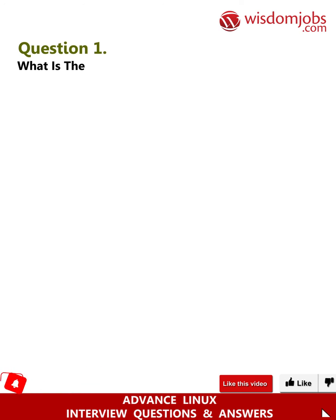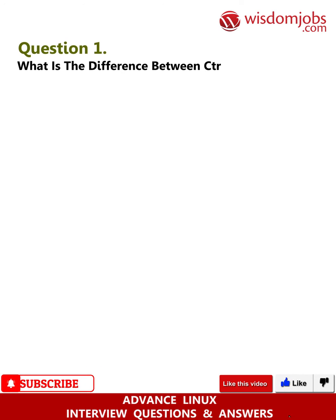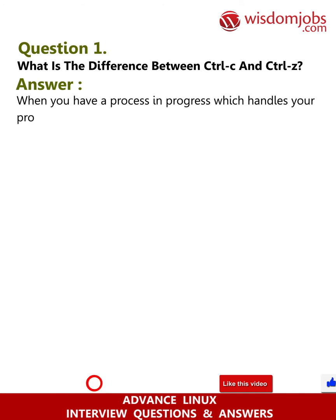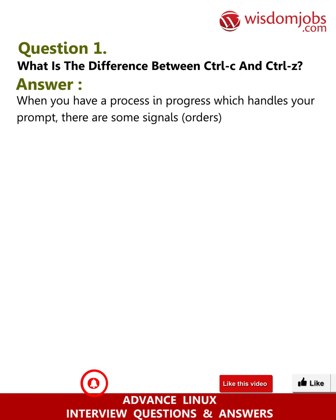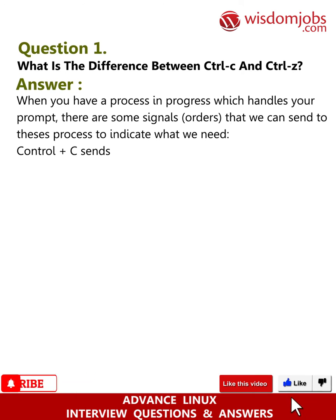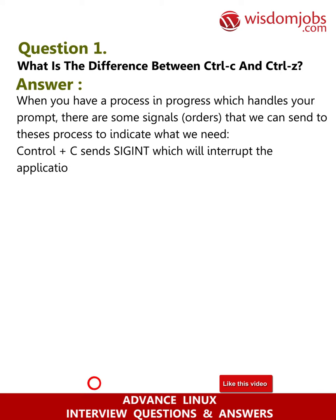Question 1: What is the difference between CTRL-C and CTRL-Z? When you have a process in progress which handles your prompt, there are some signals that we can send to the process to indicate what we need. CTRL+C sends SIGINT, which will interrupt the application, usually causing it to abort.